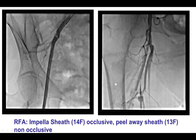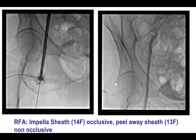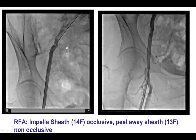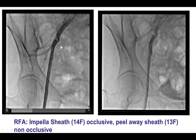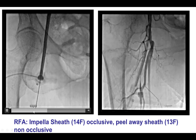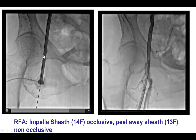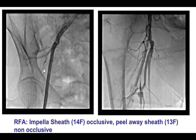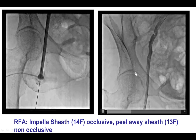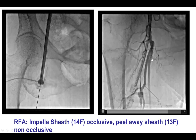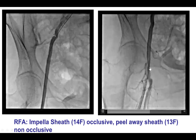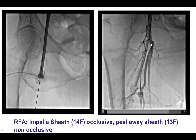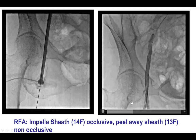We placed the Impella CP through the right common femoral artery. However, after we inserted the Impella sheath in the right femoral artery, there was no antegrade flow to the limb, which can cause ischemia. We had a consultation with our vascular surgery team. The eventual plan was to use the repositioning sheath — we removed the peel-away sheath and put the repositioning sheath, which is slightly smaller, 13 instead of 14 French. After doing that, we did have antegrade flow to the limb.